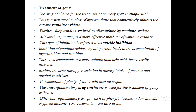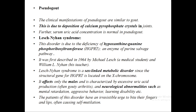Other drug therapies include reduction of purine intake. Other anti-inflammatory drugs such as phenylbutazone, indomethacin, oxyphenbutazone, and corticosteroids are also used. Pseudo-gout is a similar condition but is characterized by calcium pyrophosphate crystals depositing in the joints rather than sodium urate crystals.